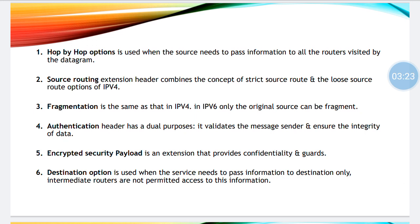The first extension header is hop by hop option, used when the source needs to pass information to all the routers visited by the datagram. It rarely happens that a packet goes directly from one sender to one receiver. Most of the time, the sender goes through multiple routers before being received by the receiver — these are hops, and that hop router information is managed by hop by hop options.